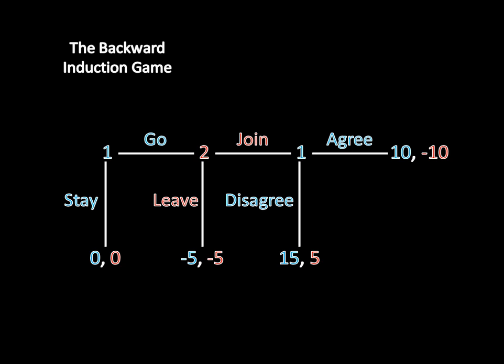It doesn't really have any intuition or story behind it. I just want to use it to go over the intuition behind backward induction and how to solve games more complicated than Selton's Game using backward induction, Selton's Game of course being what we were looking at in the last two videos. So in this game, player one stays or goes. If he goes, player two leaves or joins. And if player two joins, then player one agrees or disagrees. And those are the payoffs associated with each of those outcomes.